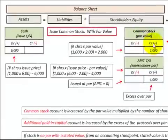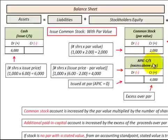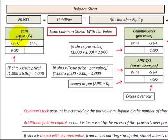To summarize: when we issue common stock with a par value, our common stock account includes the number of shares issued times the par value assigned, and our cash account is increased by the number of shares issued times the issue price. The excess of cash received over the common stock par value is set up in additional paid-in capital for common stock, equal to shares issued times the difference between the issue price minus the par value. When we issue common stock without a par value, the entire amount is assigned to our common stock account, and cash is increased by shares issued times the issue price.